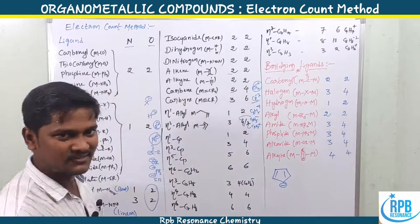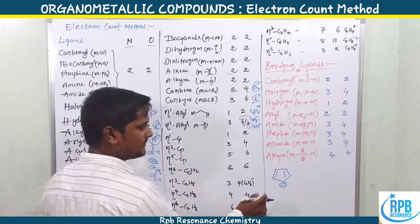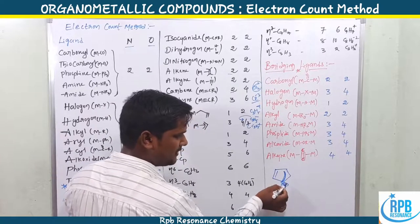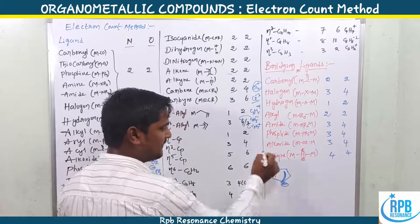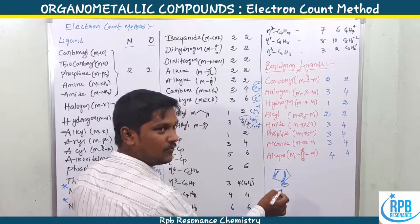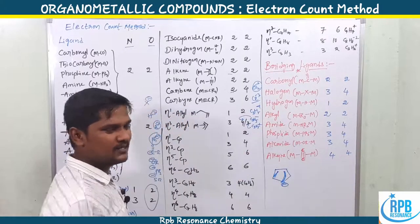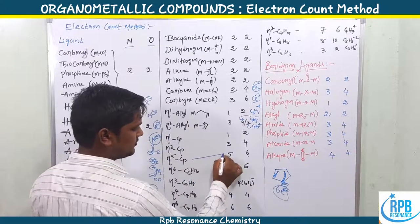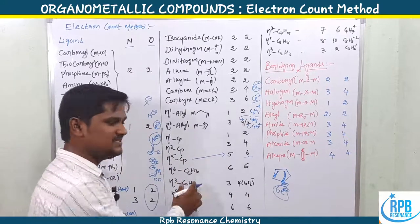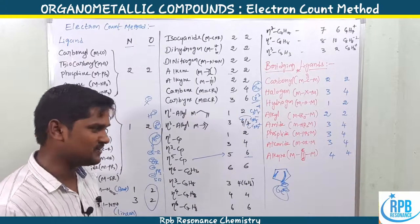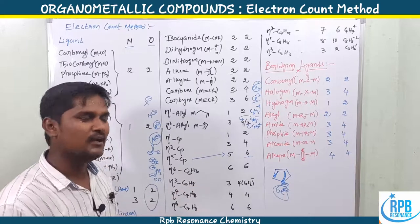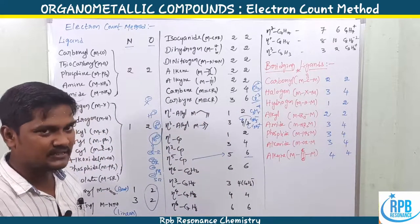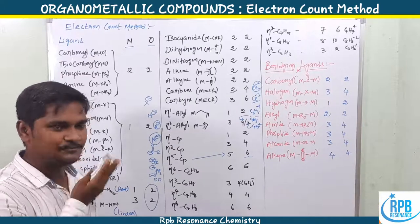For cyclopentadienyl (Cp), which is a cyclopentadienyl anion: in η3 coordination, two carbon atoms contribute — one pi bond and one negative charge equals four electrons. In η5 coordination, all five carbons contribute — two double bonds and one negative charge equals three equivalents, making it a six-electron donor in the oxidation state method. For benzene in chromocene-type complexes, both neutral and oxidation state methods give six electrons contributed.